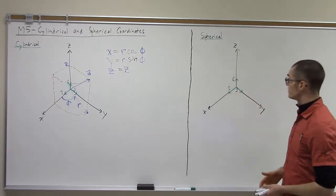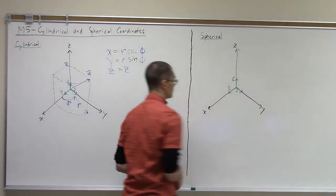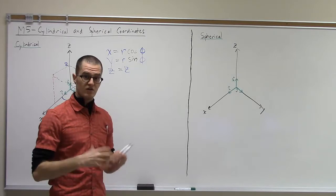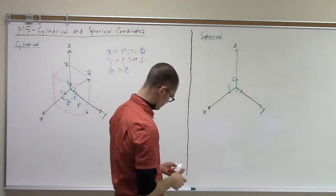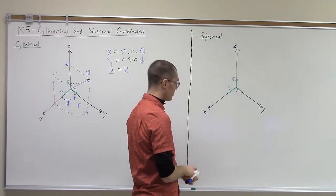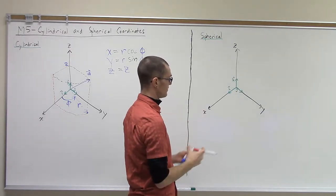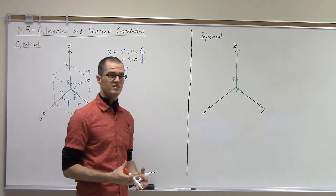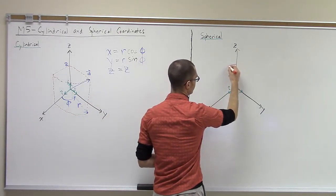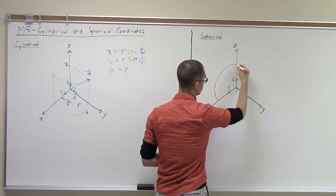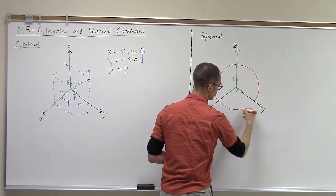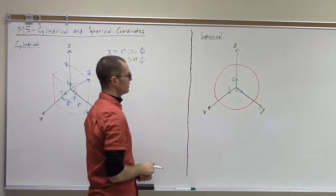Another type of coordinate system we might want to work with is a spherical coordinate system. So this is useful in global geophysics, as I mentioned. So now let's imagine that I'm plotting a point on the surface of a sphere with a radius of r. So if I just draw the outline of a sphere here, as a circle.